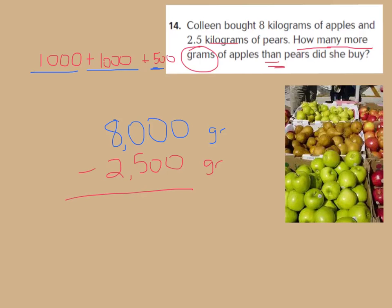Now we can find the difference. Now boys and girls, whenever you subtract with zeros, you always want to make sure that you regroup correctly. Alright, so what we're going to do is we're going to subtract our ones place first. Zero minus zero is zero. My tens place, zero tens minus zero tens are also zero tens. But my hundreds, I have zero hundreds minus 500. I cannot do that, so I need to regroup.